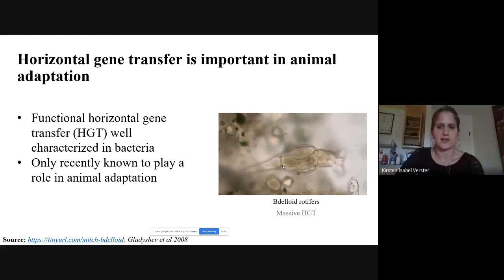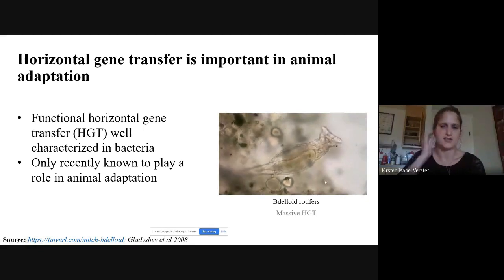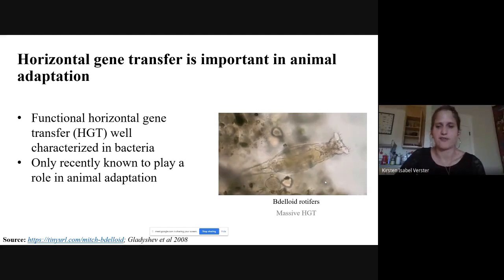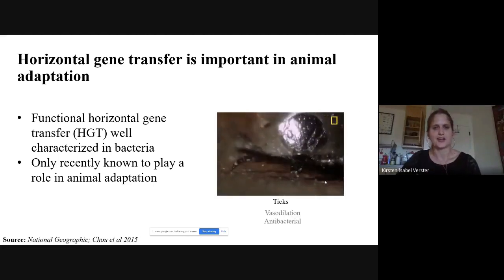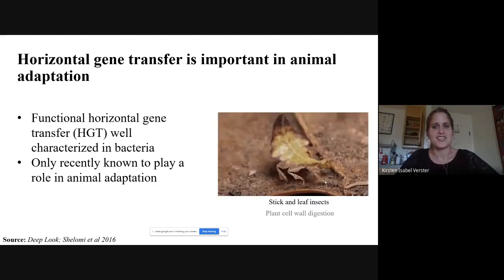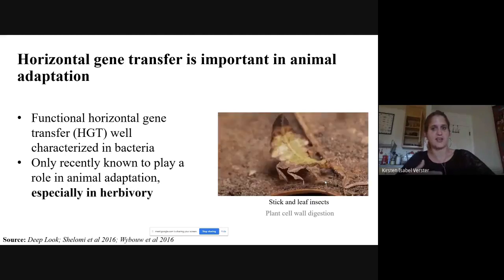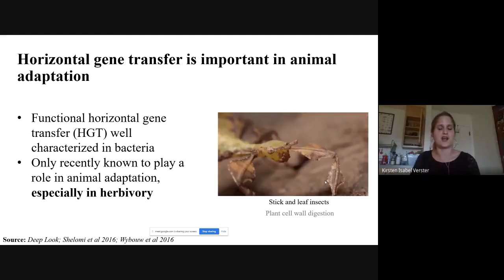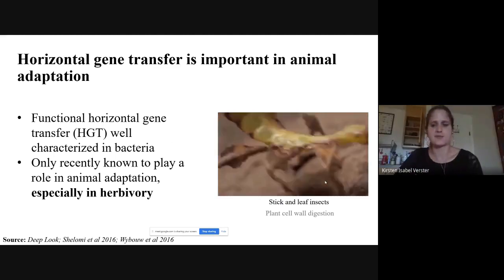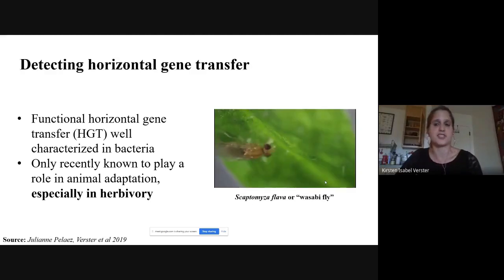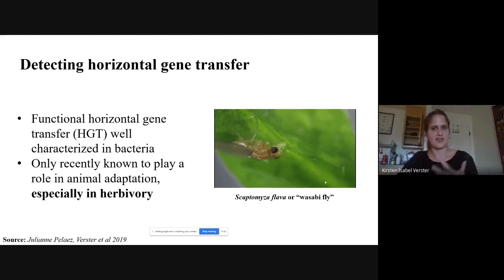That sort of HGT-mediated adaptation — helping insects digest plant cell walls or overcome plant toxins — is quite common, and that motivated me to look for horizontal gene transfer in our lab model system, the fly Scaptomyza flava, or the wasabi fly, which recently evolved herbivory. We conducted an alien index analysis, taking all identified genes in the genome and BLASTing them to NCBI to determine whether they have more hits to eukaryotic sequences or to prokaryotic/bacterial sequences. More hits to prokaryotic sequences suggests possible horizontal gene transfer.